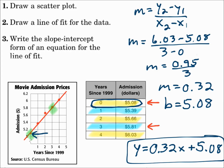To summarize: draw the scatter plot, draw the line of fit, and use two points on or close to the line to get slope-intercept form — start by finding the slope, then find b.